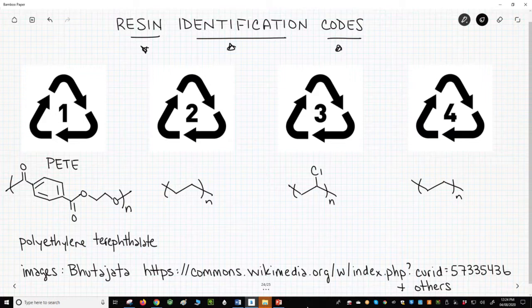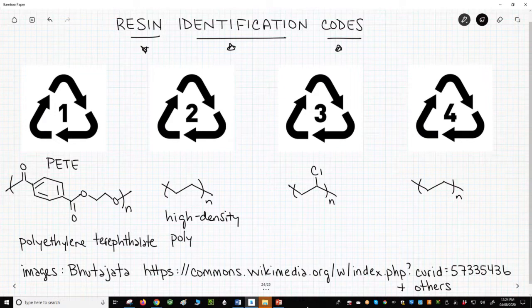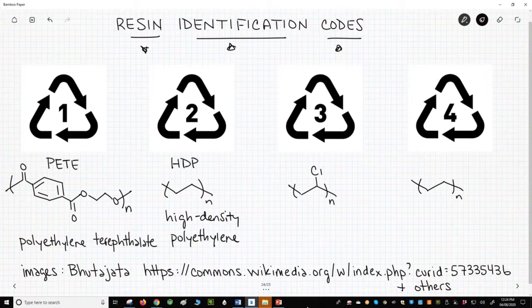Code number 2 is for high-density polyethylene, or HDPE. Polyethylene is an addition polymer made from ethylene, or ethene. HDPE is found in many bottles, like detergent or bleach bottles.